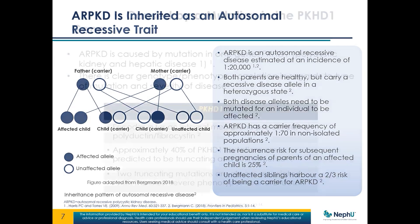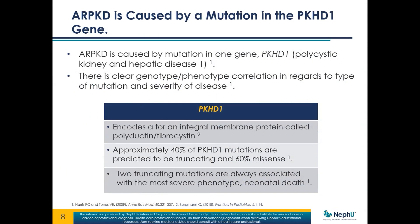ARPKD is caused by a mutation in a gene called PKHD1, which stands for polycystic kidney and hepatic disease one. The gene is found on chromosome six. It's a very large protein — about 4,000 amino acids over 66 exons — and in totality we don't know what it does. We do know it localizes to the primary cilia basal body, which is the same location as the PKD1 genes and the genes that cause things like Joubert and Bardet-Biedl syndromes.